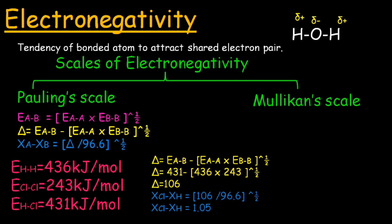If the difference in electronegativity is greater than 1.7, the bond between the two atoms is ionic. If the difference is between 1.2 and 1.7, the bond formed between the two atoms is polar and the electrons are unequally shared between the two atoms.